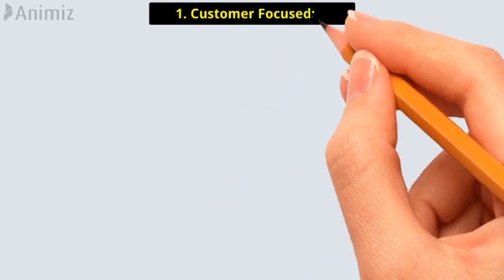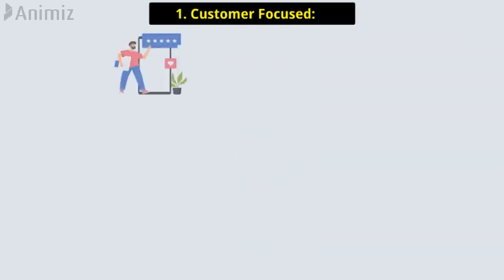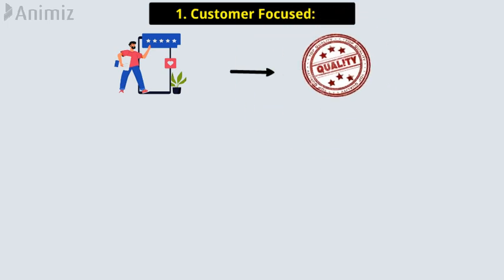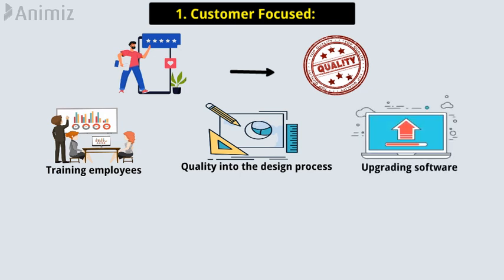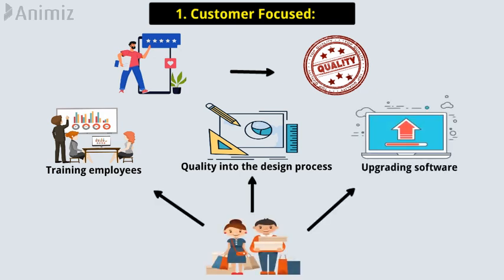Let's discuss the 7 principles of total quality management. Number 1: Customer Focused. The customer's feedback ultimately determines the level of quality. No matter what a system works to bring up quality improvement — training employees, unifying quality into the design process, or upgrading software — the customer controls whether the efforts were successful.